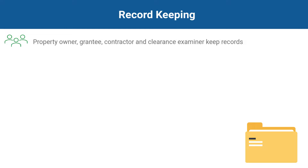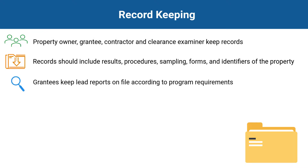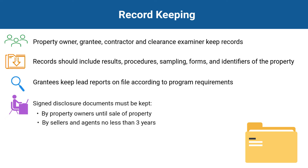The property owner, grantee, contractor, and clearance examiner should maintain records of all reports. The records should include all laboratory results, quality control and quality assurance procedures, dates of both visual examination and environmental sampling, completed forms, and appropriate identifiers for the property. Records must be retained for at least three years past the end of any assistance contract, or longer according to the specific rules of the funding program.